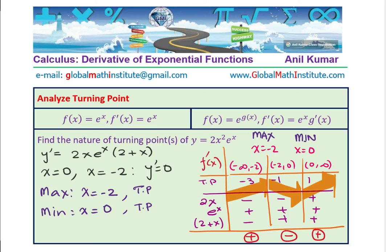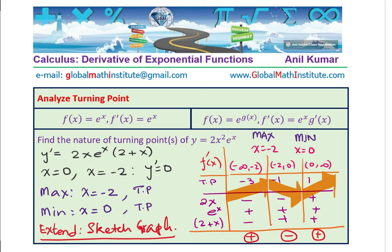That is how we answer this particular question. You could extend this by sketching the graph — later we will have similar questions on sketching exponential functions. We have found the critical parameters here, which are the turning points. With that, we come to an end of this solution. I hope the concepts are absolutely clear.